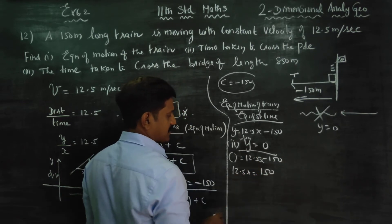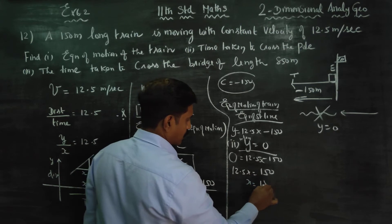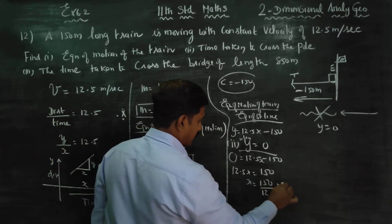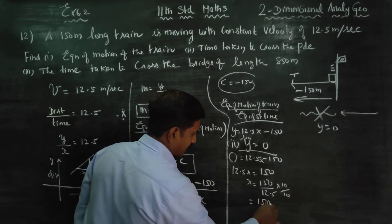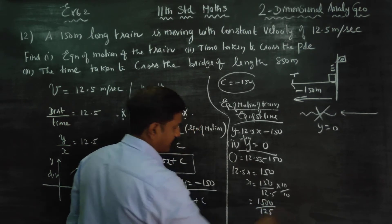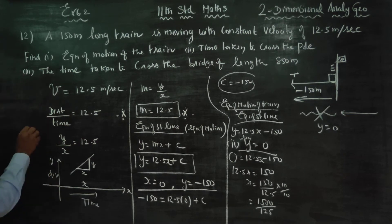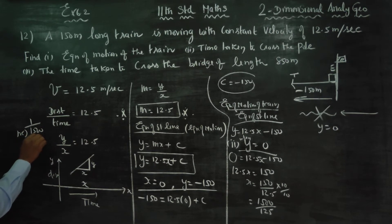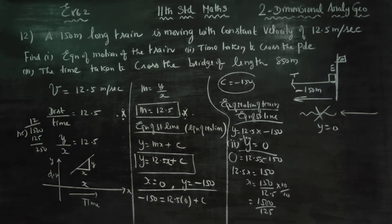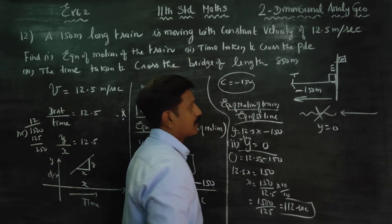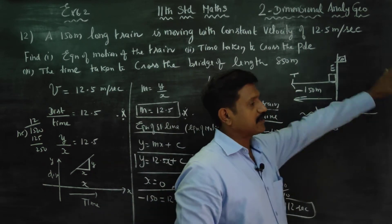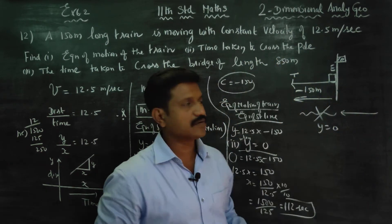12.5x is equal to 150. x is equal to 150 divided by 12.5. This gives 1500 by 125. Balance 25, two times - then 12 seconds.